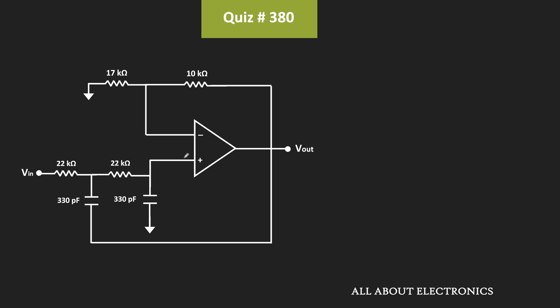the 3dB frequency can be given as 1 divided by 2π times the square root of R1×R2×C1×C2.